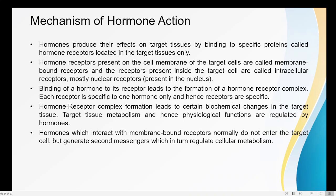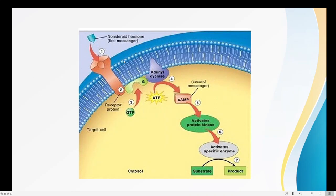Hormones produce their effect on target tissue by binding to specific proteins called hormonal receptors located in the target tissue. The target tissue is the tissue on which the hormone is making its effect. On the surface of these cells there will be certain proteins known as hormone receptors, and the function of the hormone receptor is to attach with the hormone.